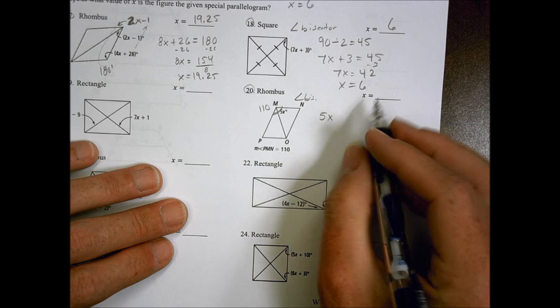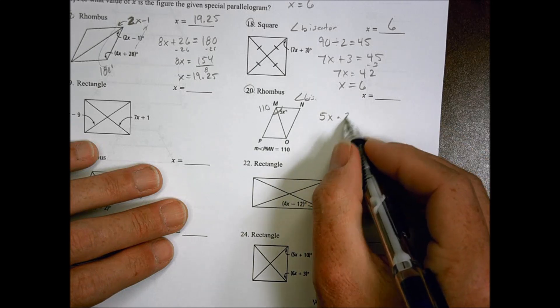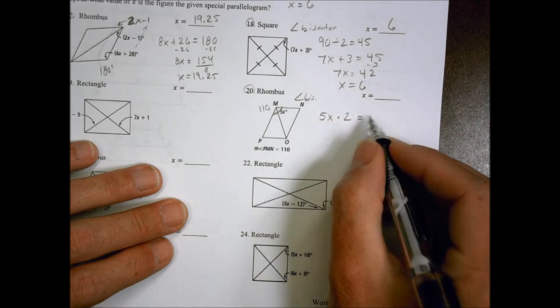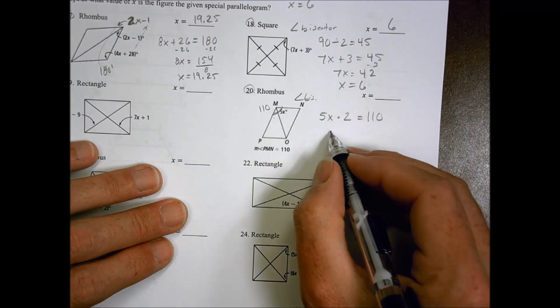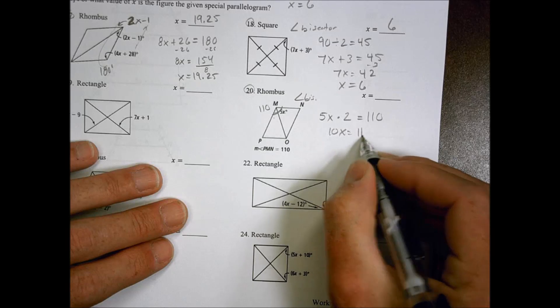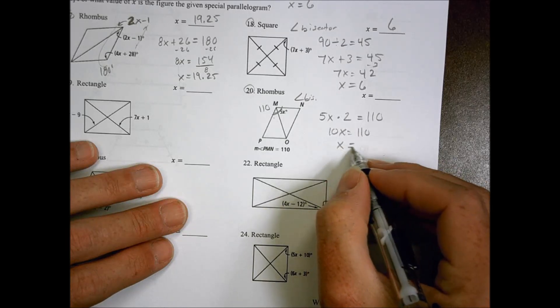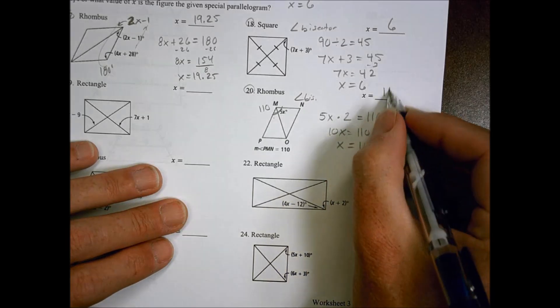And that's going to be equal to 110. If I have two of those, it's 110. So 10X equals 110, which makes X equal to 11 for number 20.